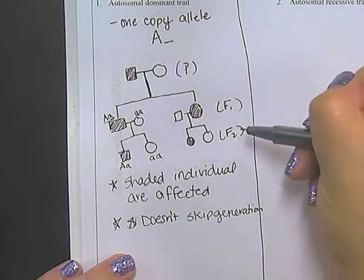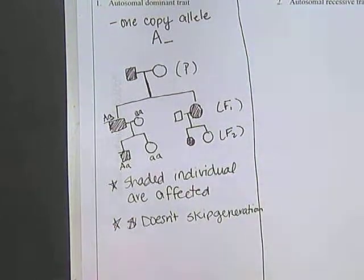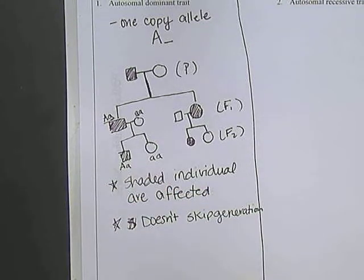So between P, F1, F2, F3, you're always going to see at least one shaded individual, and that's your big key, that's one of your big key things that you're looking at, is, is it showing up in every generation?